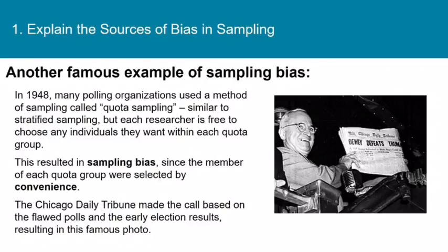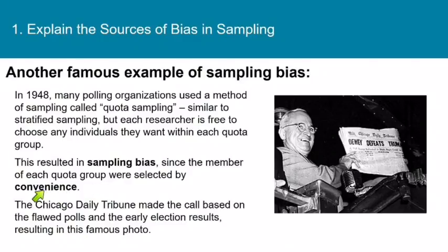Here's another famous example of sampling bias just a few years later. In 1948, many polling organizations used a method called quota sampling, which is similar to stratified sampling, but instead of doing a simple random sample within each strata, researchers were free to choose any individuals they wanted within each quota group. This resulted in a sampling bias because the members of each group were selected by convenience. The Chicago Daily Tribune made the call based on flawed polls, resulting in the famous photo where President Truman is holding up a newspaper that says 'Dewey Defeats Truman' — and he's smiling because the headline turned out to be wrong.